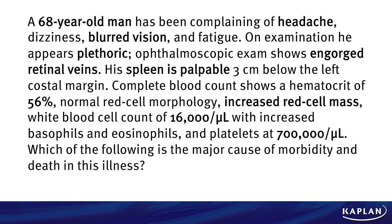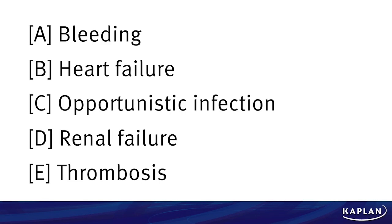But the question is not asking what the disease is. On Step 2CK, you have to think beyond just the diagnosis. This question asks: which of the following is the major cause of morbidity and death in this illness? The answer choices are: bleeding, heart failure, opportunistic infection, renal failure, or thrombosis. Take a few moments and select what you think is the best answer.